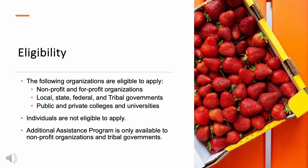Entities eligible to apply to the SCBGP include non-profit and for-profit organizations, local, state, federal, and tribal government entities, and public and private colleges and universities. Importantly, individuals may not apply. An individual is someone submitting an application on their own behalf rather than as a representative of an organization or institution. If you are an individual and you have an idea for a project, we encourage you to partner with one or more eligible organizations. Note again that the eligibility for the Additional Assistance Program is more limited — please refer to the Additional Assistance RFCP or email grants at cdfa.ca.gov for more information.